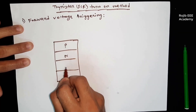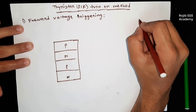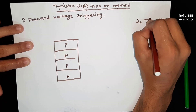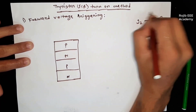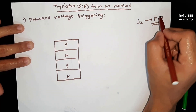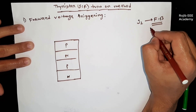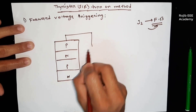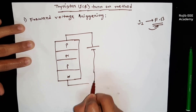The main purpose is that junction J2 is forward biased, so that is the main purpose. If we start the junction J2 in the reverse biased state, we can make it forward biased, then P is positive and N is negative. So this is the main purpose.